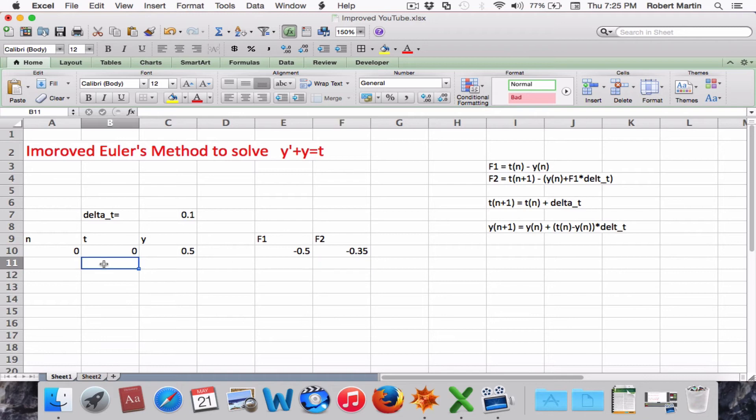And we now go down to put a formula for T. So our next value of T is going to be equal to the previous value plus delta T. Our Y value will be equal to the previous Y value plus the average slope. So it's going to be F1 plus F2 divided by 2 gives us the average slope times delta T.